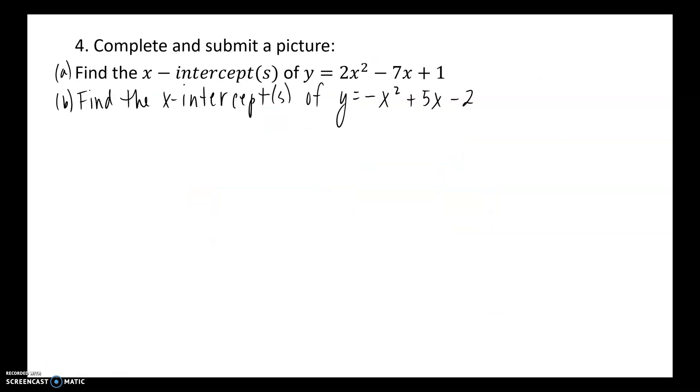Okay, so your classwork today, for credit for today's class, I want you to complete and submit a picture of your solutions to these two. Find the x-intercepts of y is equal to 2x² minus 7x plus 1. Find the x-intercepts of y is equal to negative x² plus 5x minus 2. They both need the quadratic formula. I'll save you that time, and I want to see the work. I want to see every part of your work to get to your final solution. Take a picture, submit it on the assignment, and I will provide feedback. Have a great day.